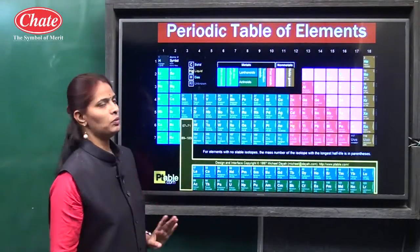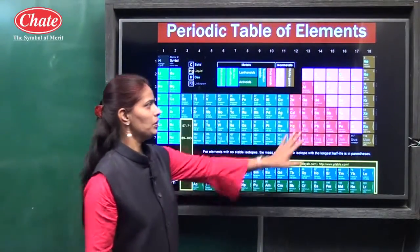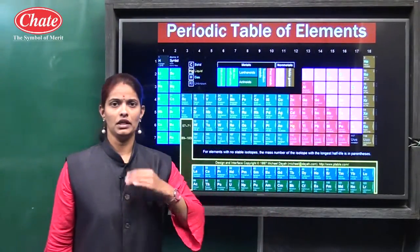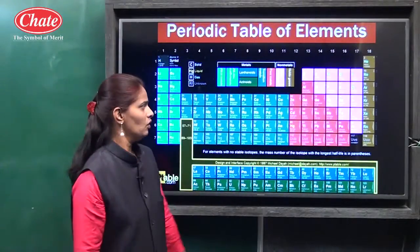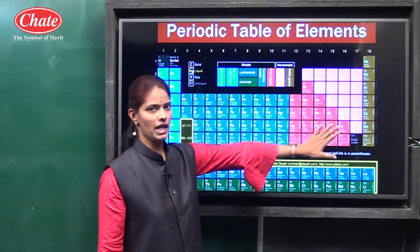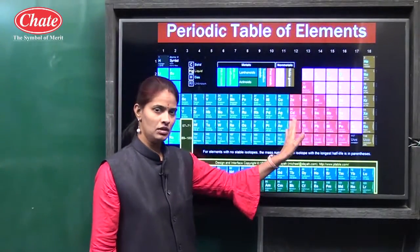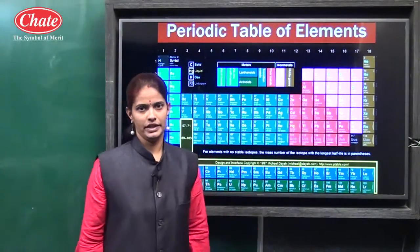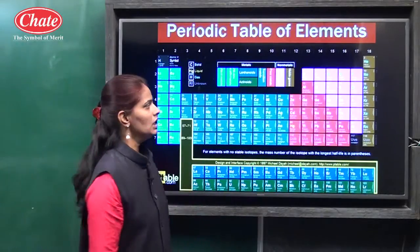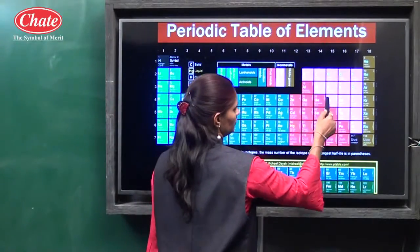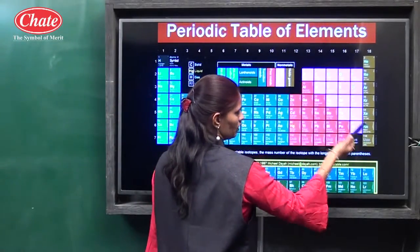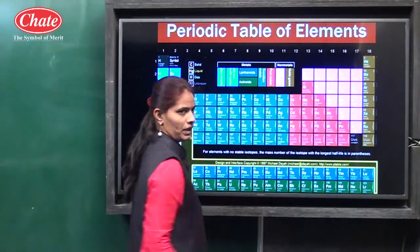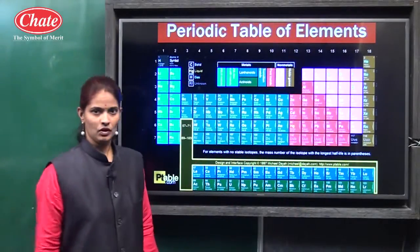From these four blocks, P block has metals, non-metals, and metalloids. Only P block has metals as well as non-metals as well as metalloids. A zigzag line separates the metals and non-metals.